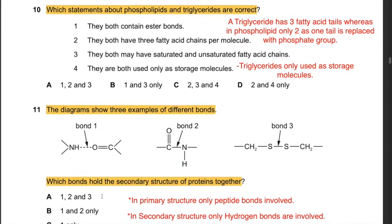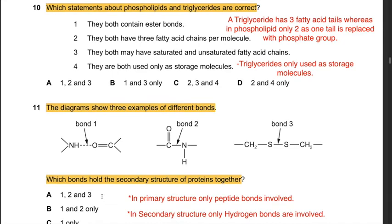Question 10: Which statements about phospholipids and triglycerides are correct? Statement 4 - they are both used only as storage molecules - is obviously incorrect, as only triglycerides are storage molecules; phospholipids form part of membranes. Statement 2 - they both have 3 fatty acid chains per molecule - is also incorrect, as in phospholipids one fatty acid is replaced by a phosphate group; only triglycerides have 3 fatty acid chains. Therefore the answer is B: 1 and 3 only, meaning they contain ester bonds and both may have saturated and unsaturated fatty acid chains.